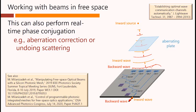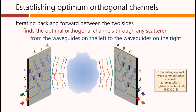This can also perform real-time phase conjugation, such as correcting aberration or undoing scattering. If we introduce an aberrating plate into the path, this system will automatically phase conjugate out the aberrations of that plate in both directions. If we were to have two of these systems looking at one another through some scatterer or medium, then we could iterate back and forward between the two sides to find the optimal orthogonal channels through any scatterer. Note incidentally that there is always a set of orthogonal channels through any scatterer.